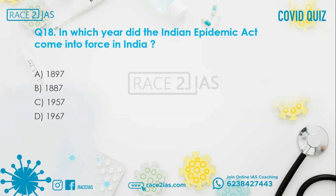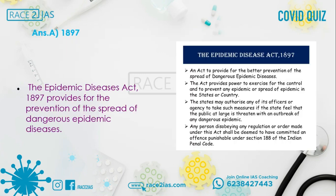Question number 18: In which year did the Indian Epidemic Act come into force? Option A: 1897. Option B: 1887. Option C: 1957. Option D: 1967. The right answer is Option A, 1897. The Epidemic Diseases Act of 1897 provides for the prevention of the spread of dangerous epidemic diseases.